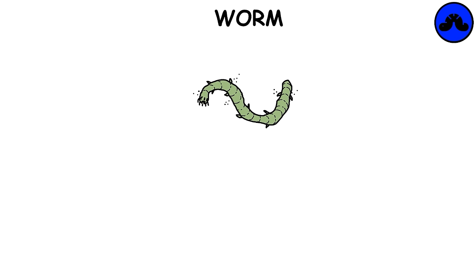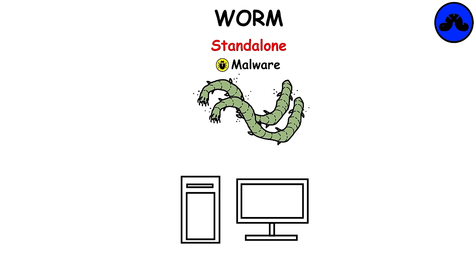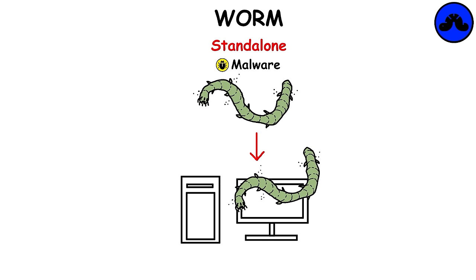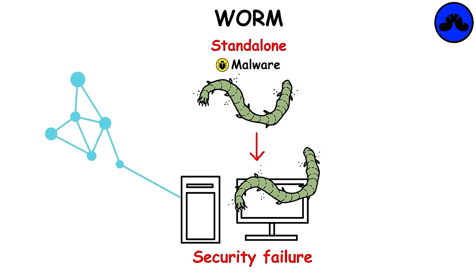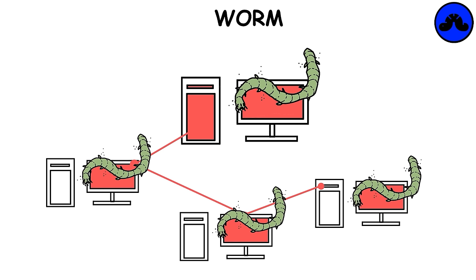Worm. A computer worm is a standalone malware program that replicates itself in order to spread to other computers. Most of the time it uses a computer network to spread itself, relying on security failures on the target computer to access it. When these new worm-invaded computers are controlled, the worm will continue to scan and infect other computers using these computers as hosts, and this behavior will continue, exponentially increasing its replication.